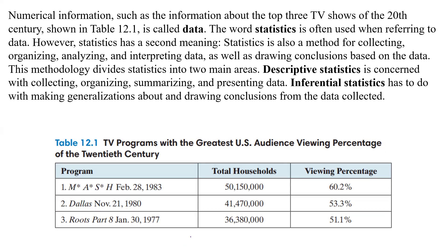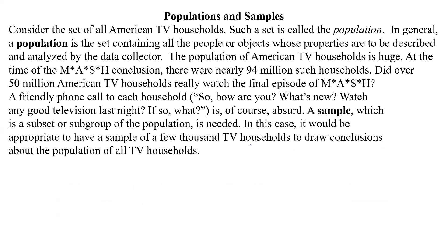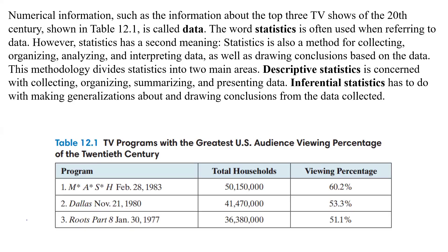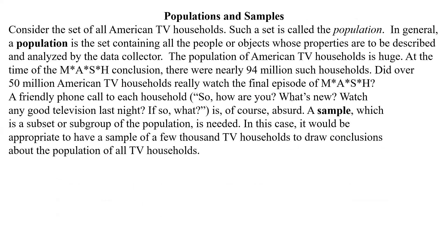So we have populations and samples. Consider the set of all American TV households — such a set is called the population. In general, a population is a set containing all the people or objects whose properties are to be described and analyzed by the data collector. The population of American TV households is huge; at the time of the MASH conclusion, there were nearly 94 million such households.